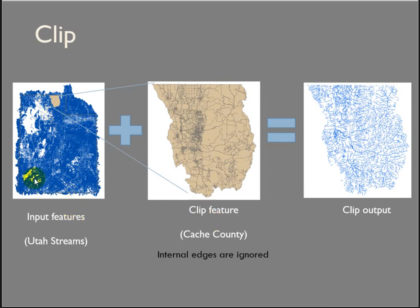So clipping — here's a stream polygon dataset for the entire state of Utah. Here's the outline of Cache County. If we zoom in on that, you can see that Cache County has a bunch of divisions in it. This is actually census data, so it's all divided up into census blocks. But if we use this as a clip feature, all those internal edges are ignored, as are the hundreds of attributes associated with the census data. The clip output is just going to be the stream polylines within Cache County.